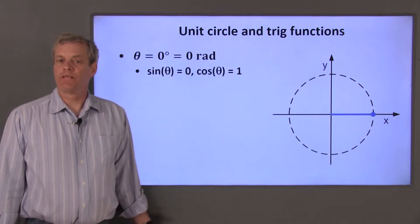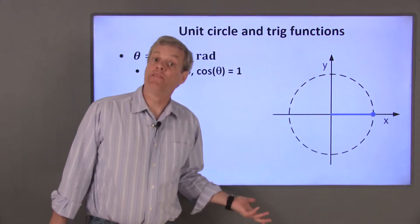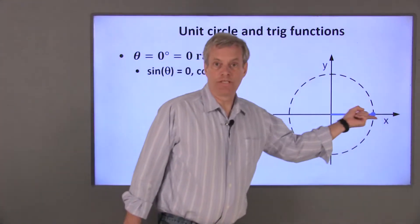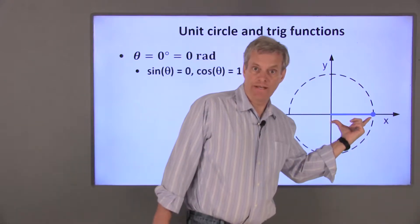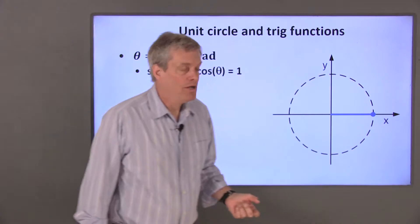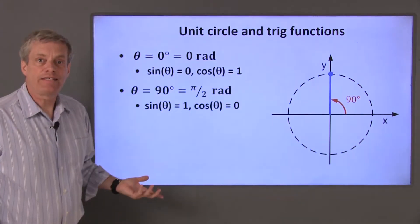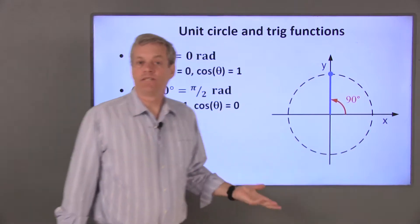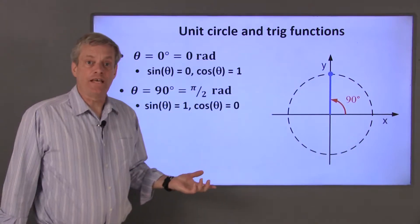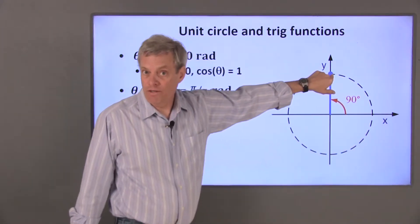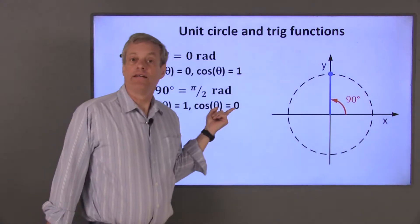First I'll look at cases where the angle theta is multiples of 90 degrees from the positive x axis, so the points I'll be talking about are on the x and y axes. If theta is equal to 0 degrees, the point on the unit circle is on the positive x axis, meaning the x value is the same as the radius of the circle, and the y value is 0. So the sine of 0 degrees is 0, and the cosine of 0 degrees is positive 1. The next case is theta equals 90 degrees, which is pi over 2 radians. For this angle, the point is directly on the positive y axis, so the y value is 1 and the x value is 0. This means that the sine of 90 degrees is 1, and the cosine of 90 degrees is 0.